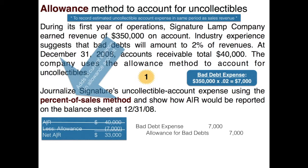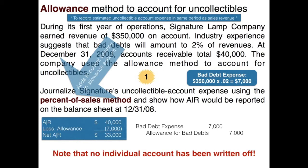Also important to note: no individual account has been written off at this point. We are simply assuming we're not going to collect $7,000 of our $350,000 of accounts receivable. We don't know any particular client or customer at this point that we're going to write off — we haven't really pinpointed anyone yet.